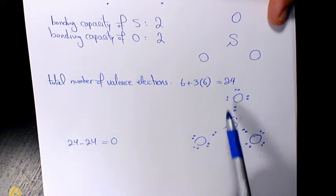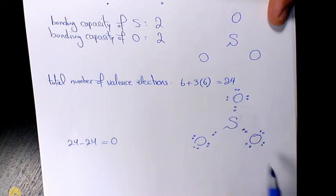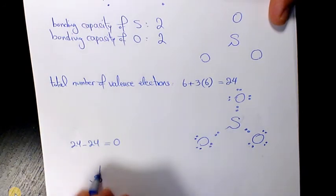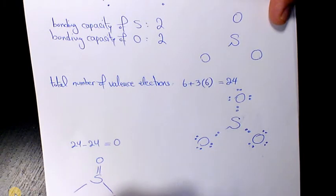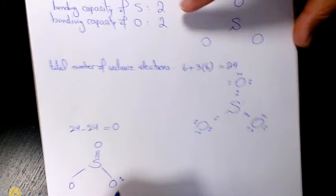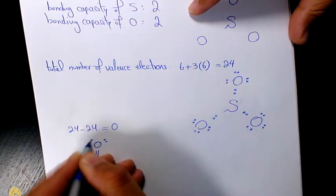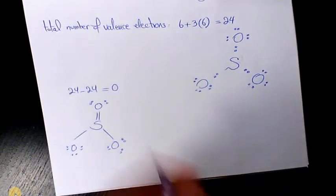make an octet, we need to move one pair of lone electrons from oxygen to the sulfur, doesn't matter which one. So it means that we have a resonating situation like that, or you can show it as